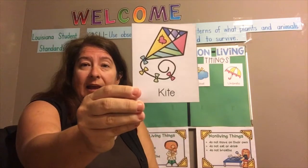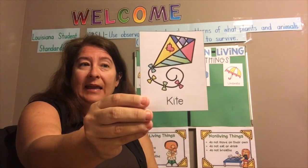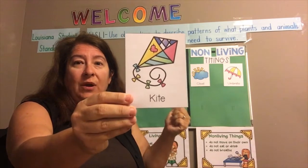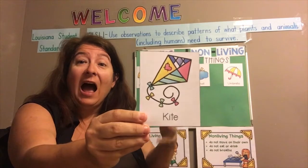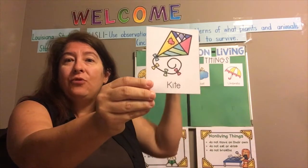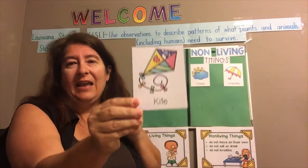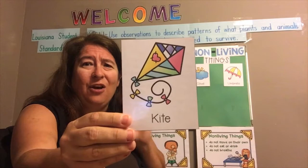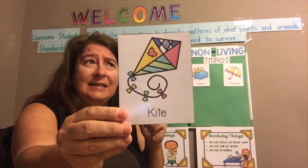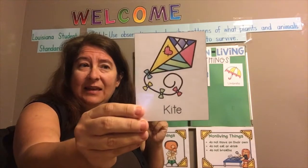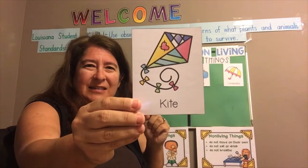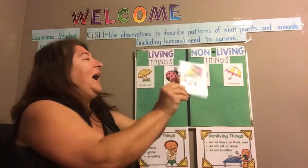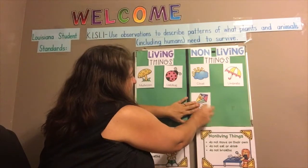Next is a kite. A kite is an object that flies through the air, but I know that when a kite flies, I have to be pulling the string through the wind in order for it to fly. So a kite doesn't move on its own, it doesn't eat, it doesn't breathe, it doesn't drink water, and it doesn't grow and change — it's just whatever I made it to be. So a kite would be a non-living thing.